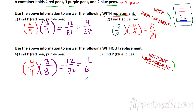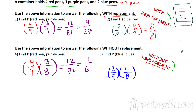Now find the probability of pulling a blue pen and then another blue pen, without replacement. The first probability is 2 out of 9. We pull that blue pen out and don't put it back. Now there are only 8 pens, and only 1 blue pen left. So the second probability is 1 out of 8. Multiply: 2/9 times 1/8 equals 2 out of 72, which is 1 out of 36.